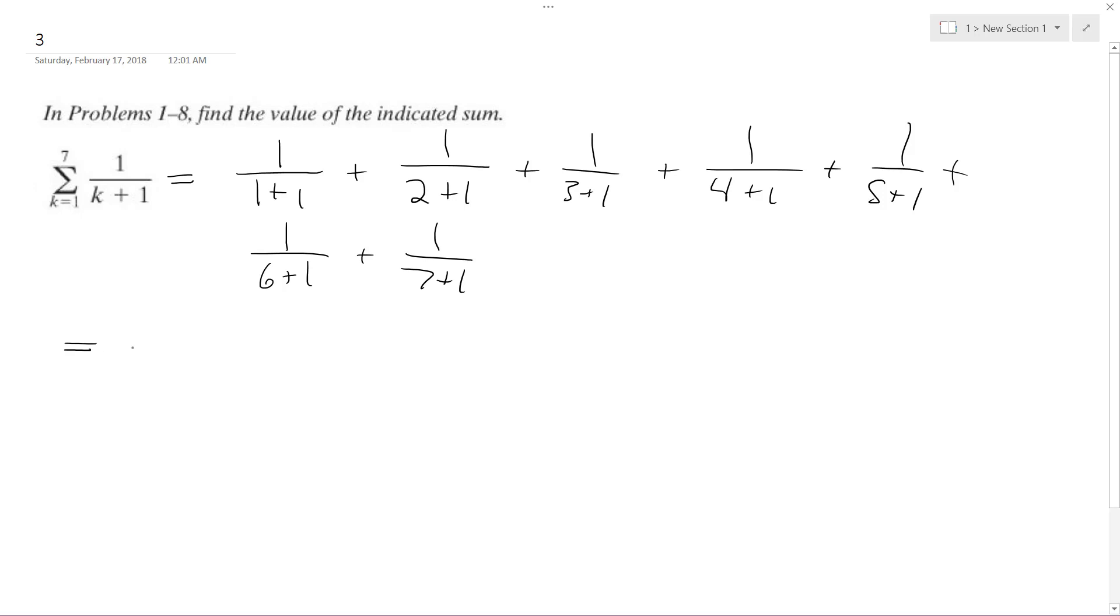So what we end up with is one over two plus one over three plus one over four plus one over five plus one over six plus one over seven plus one over eight.